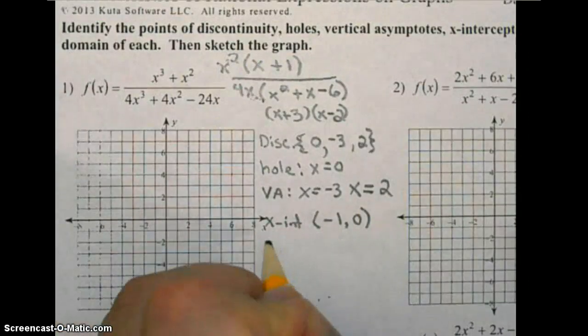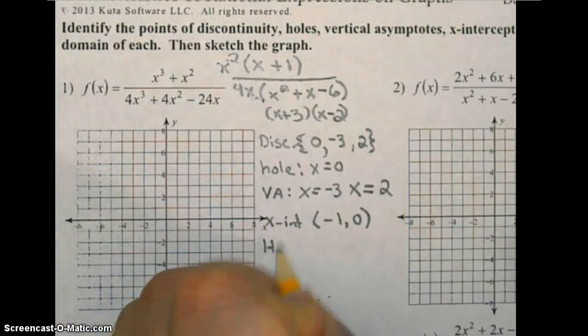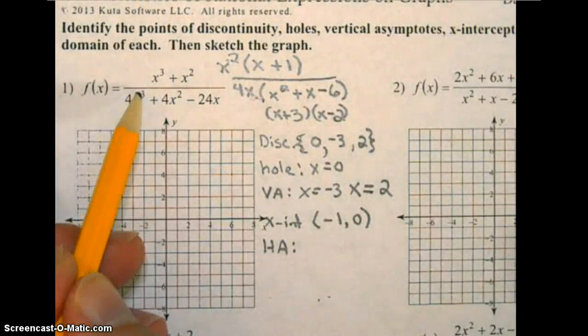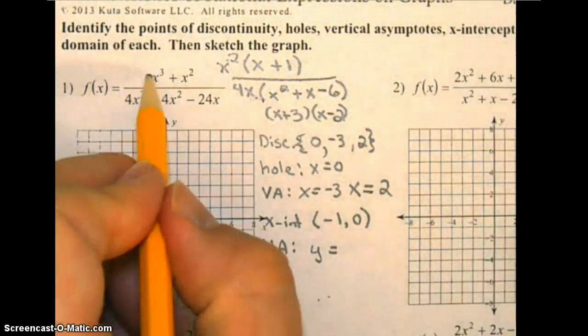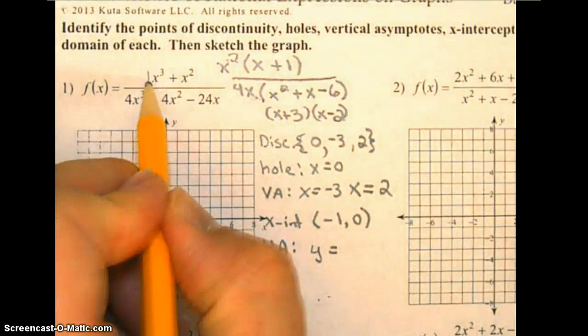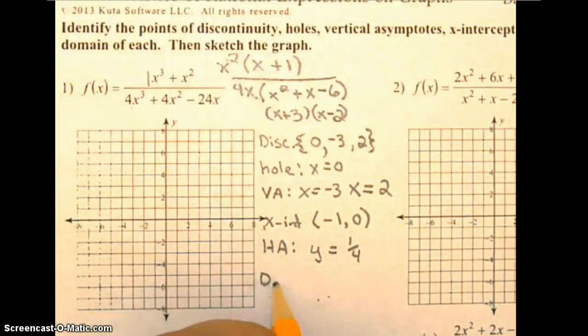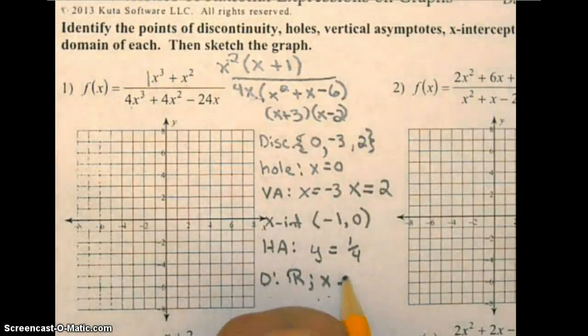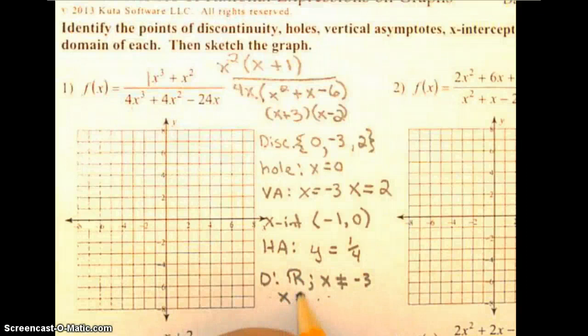Finally, horizontal asymptote and domain. Horizontal asymptote: remember we look at the degrees. Since the degrees are the same, our equation will be y equals the leading coefficient, which is one over four, one over four. The domain will be all real numbers except x does not equal negative three, x does not equal two, and x does not equal zero.